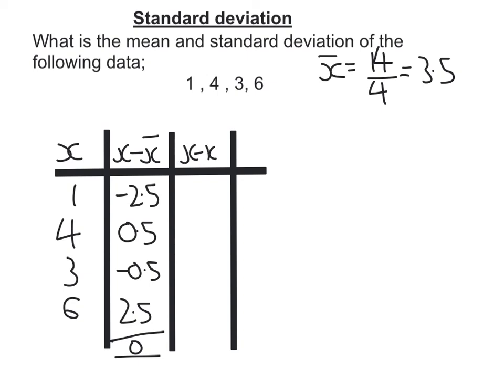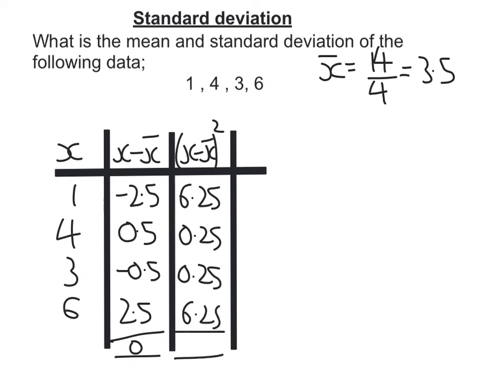Last column — I now square those numbers. I'll probably use a calculator for this one. Negative 2.5 squared is 6.25. 0.5 squared is 0.25, as is negative 0.5 squared. And 2.5 squared is 6.25. Adding up this column, I get 13.